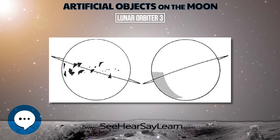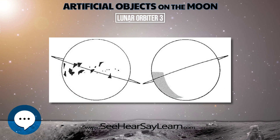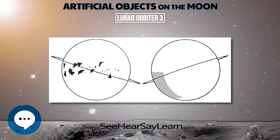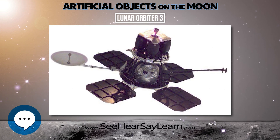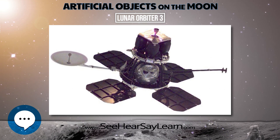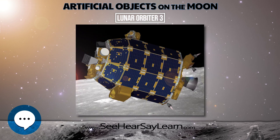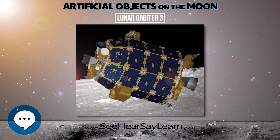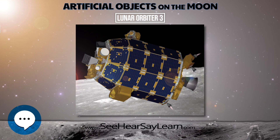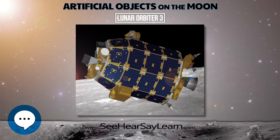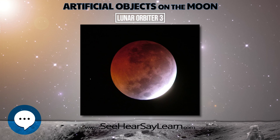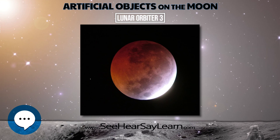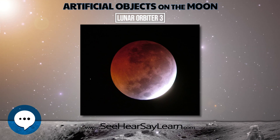Accurate data were acquired from all other experiments throughout the mission. The spacecraft was used for tracking purposes until it struck the lunar surface on command at 14.3 degrees N latitude, 97.7 degrees W longitude on October 9, 1967.